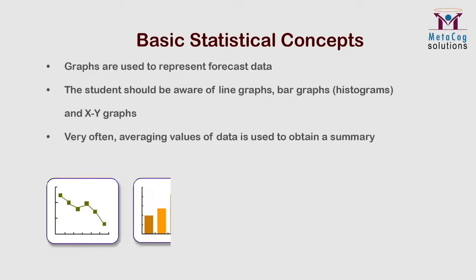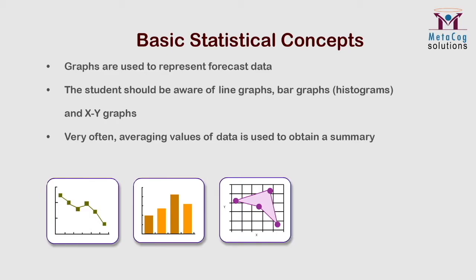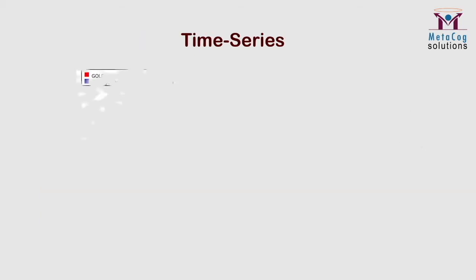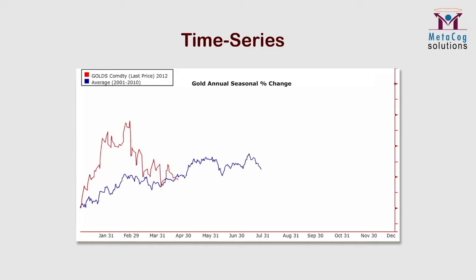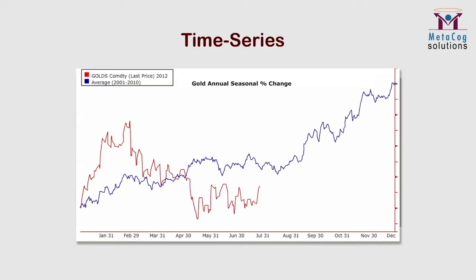Line graphs, bar graphs, and XY graphs are the ones most commonly used. It is helpful to study the time series graph shown here, as it illustrates the various defining characteristics we need to know in interpreting the graph. A time series graphically shows a sequence of data points measured at points in time, spaced out at uniform time intervals. The trend is the long-term component that represents growth or decline over an extended period of time.